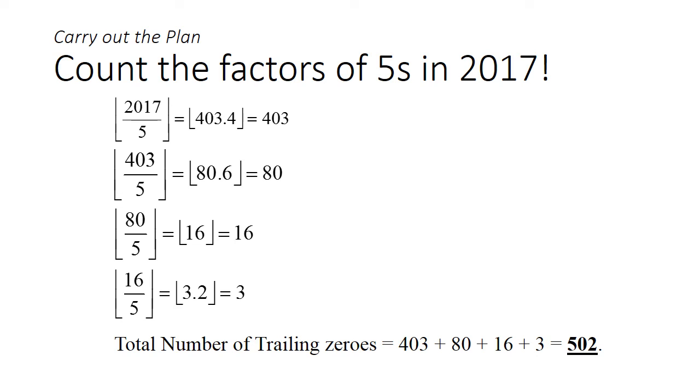In total, the multiples of 5 produce 403 trailing 0s. The multiples of 25 produce an extra 16 more 0s. And finally, the multiples of 625 add 3 more trailing 0s on top of all that. That gives us a total of 502 trailing 0s.